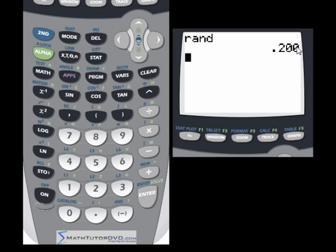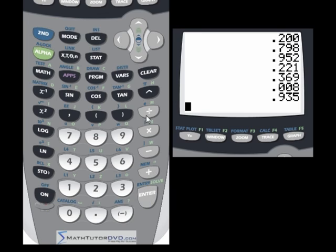Now once you put it up there, you can continue generating random numbers by continuing to hit enter. Notice I'm not putting the command there anymore, but the calculator is smart enough to know that if I generate one random number, I'm probably going to want to generate a few more. So if you keep hitting enter, you keep getting random numbers.